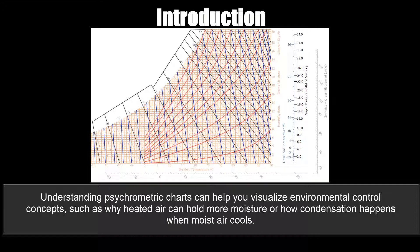Understanding psychrometric charts can help you visualize environmental control concepts, such as why heated air could hold more moisture or how condensation happens when moist air cools.